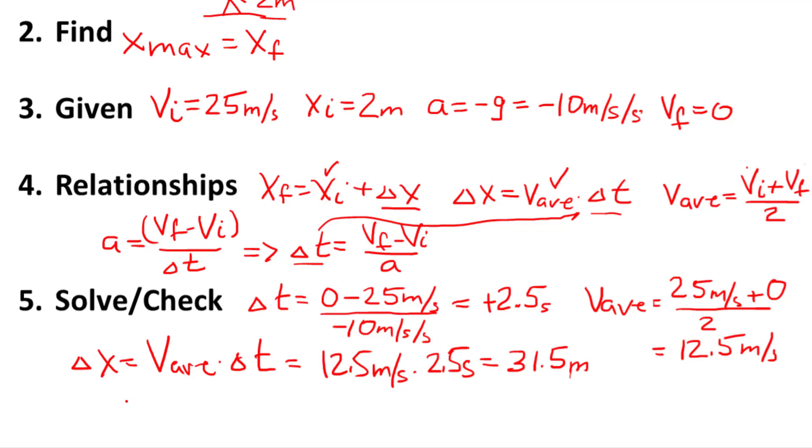So we are just about done. My final position is equal to my initial position, 2 meters, plus my change of position, 31.5 meters. It tells me the maximum height it reaches is 33.5 meters is our final position. I'll highlight that by putting a box around that.